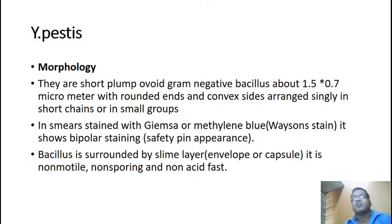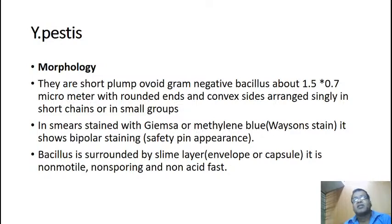Yersinia pestis is a short, plump, ovoid gram-negative bacillus about 1.5 by 0.7 micrometers with rounded ends and convex sides, arranged singly, in short chains, or in small groups. In smear stained with Giemsa or methylene blue, it shows bipolar staining — a safety pin appearance. Bipolar staining means only the ends are stained; the central portion is not stained, and you can see the cell wall.